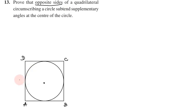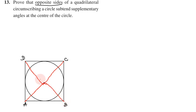Opposite sides of a quadrilateral circumscribing a circle subtend supplementary angles at the center of the circle. So, join the two endpoints to the center. The two opposite sides joined to the center of the circle give supplementary angles - meaning the two angles add up to 180 degrees. Now we can prove this.